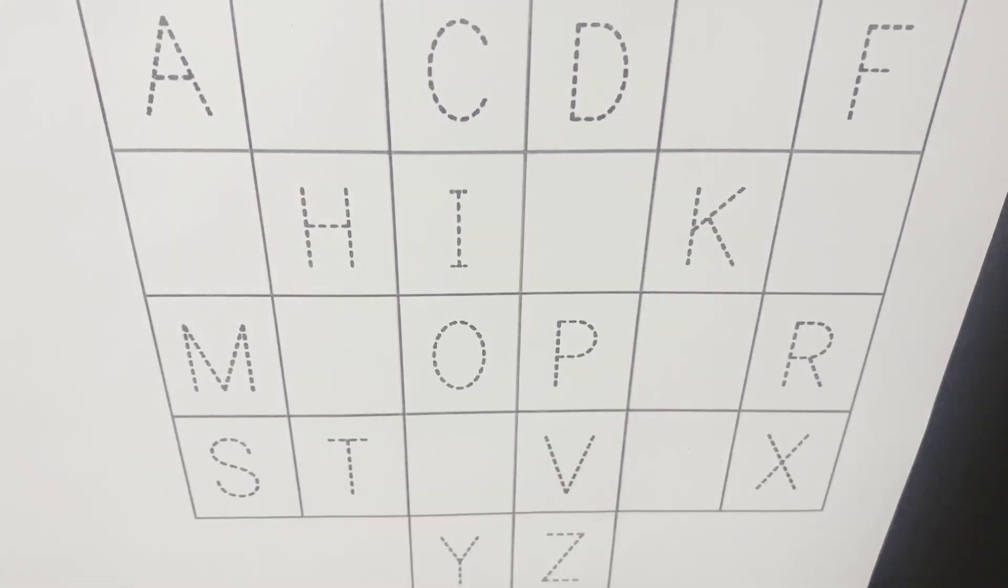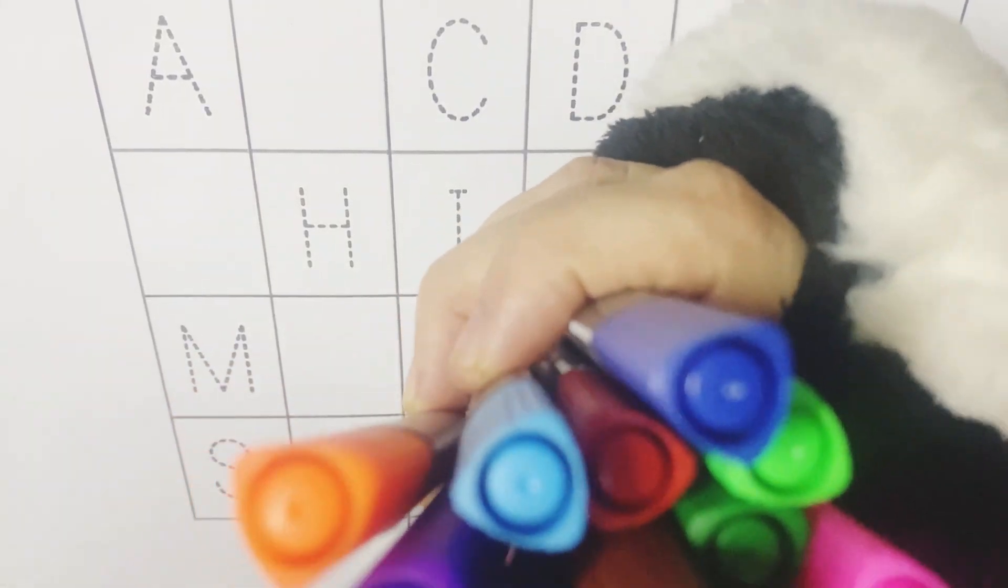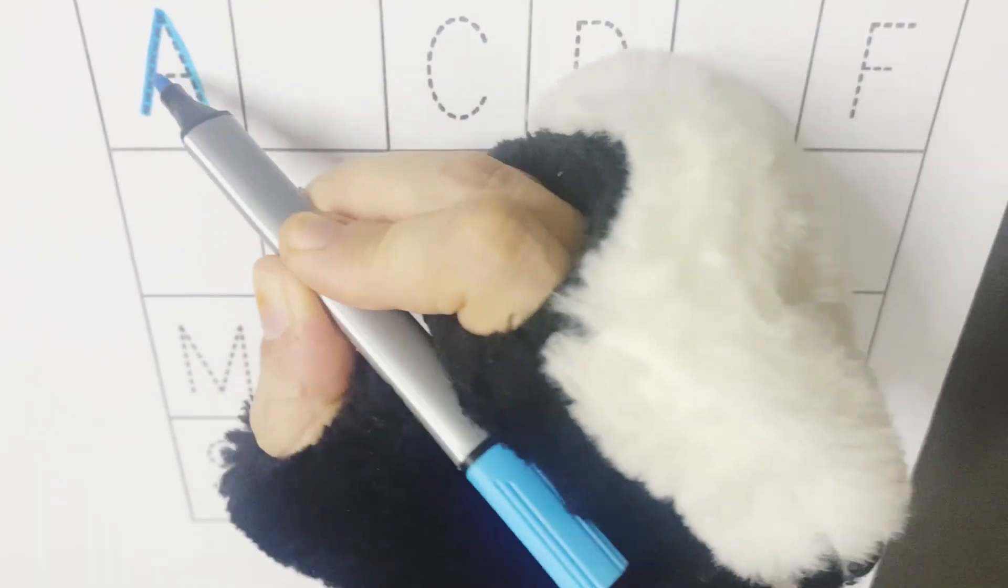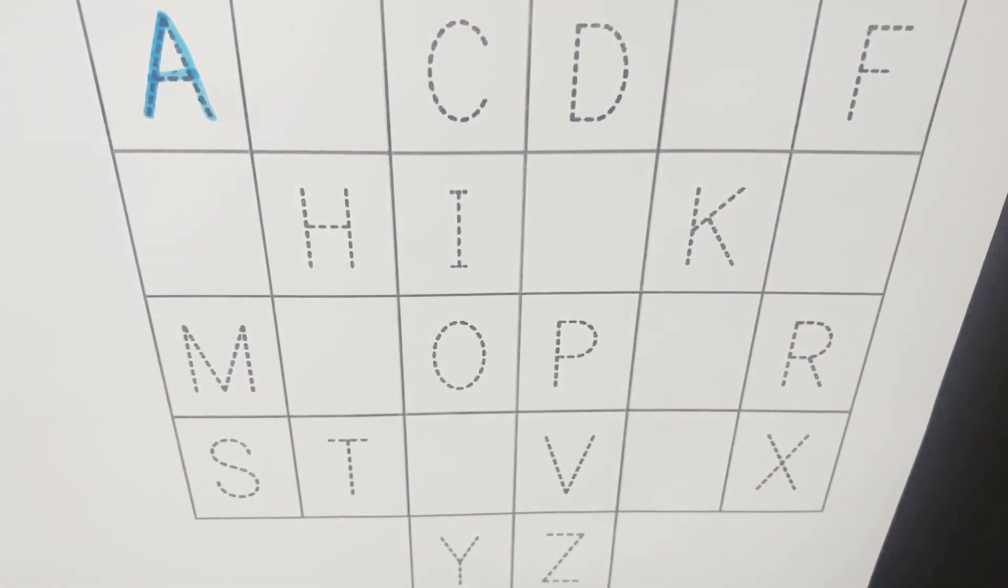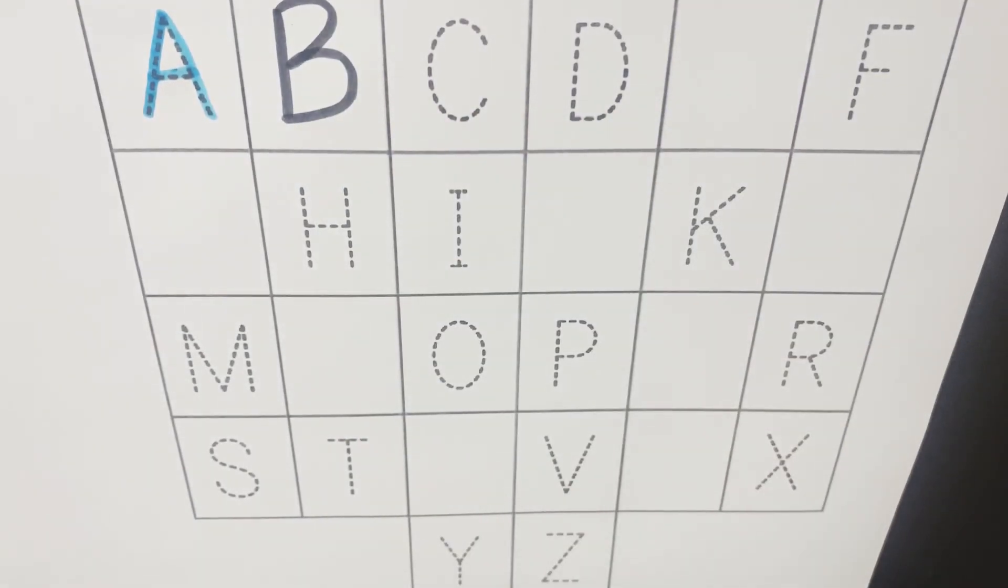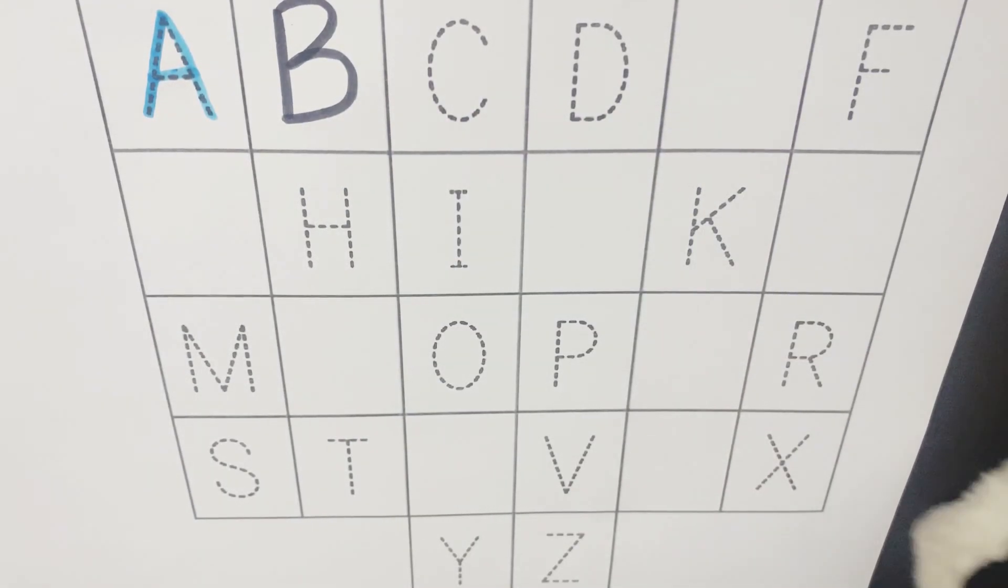Black color. So let's start writing the letters A to Z. Let's start with letter A. A is for apple, A for ant, A for alligator. B is for balloon, B for bat, B is for ball. What comes after B?